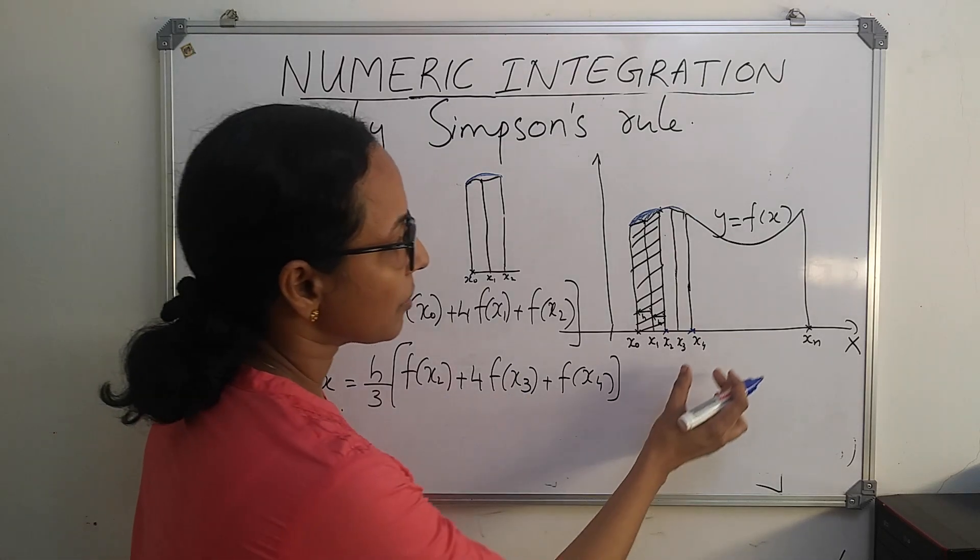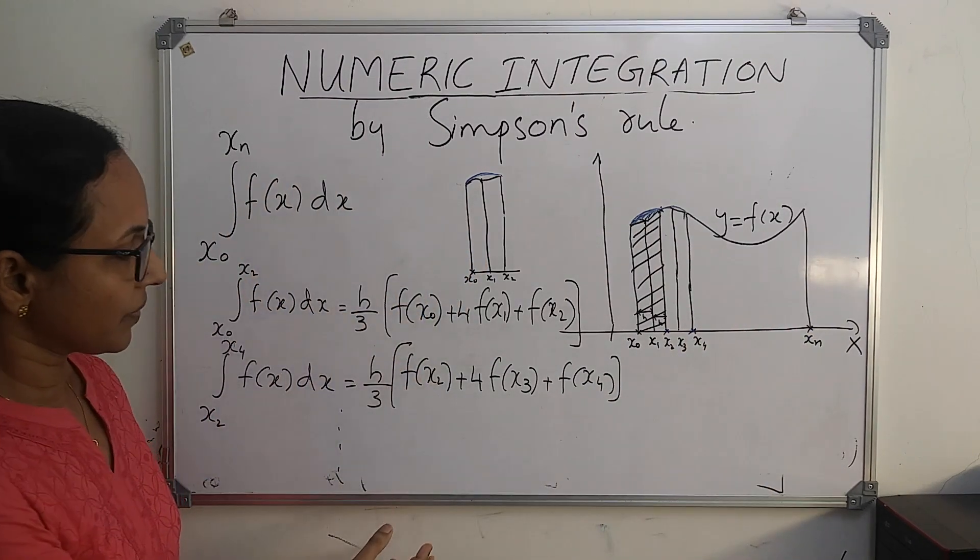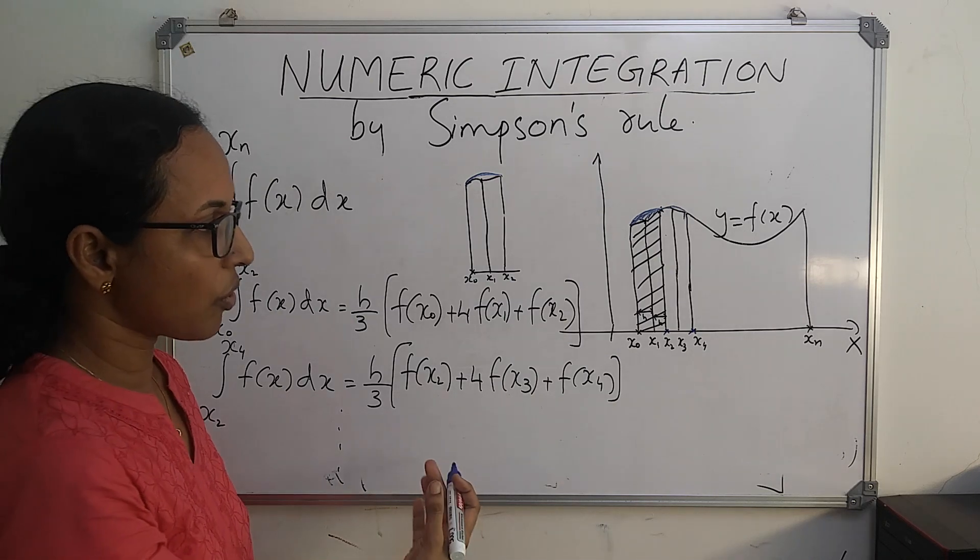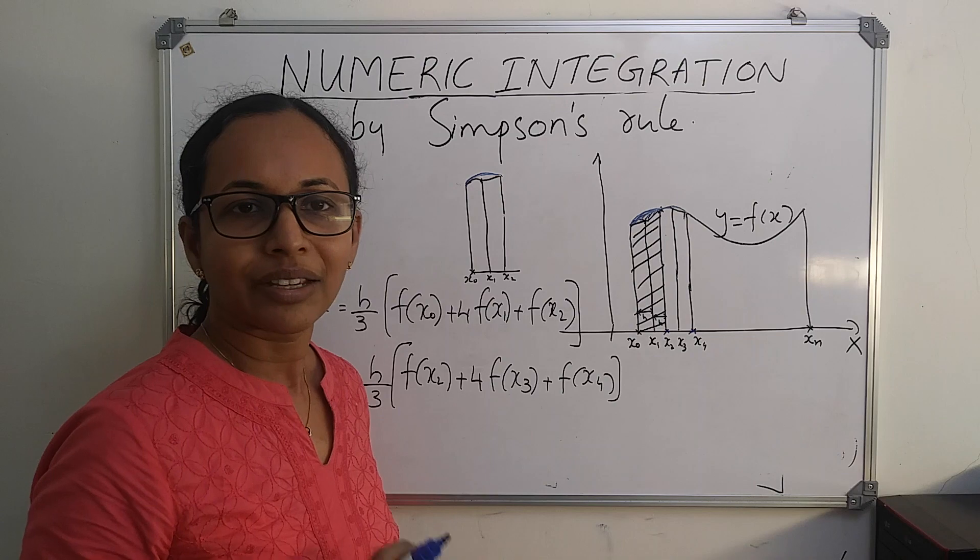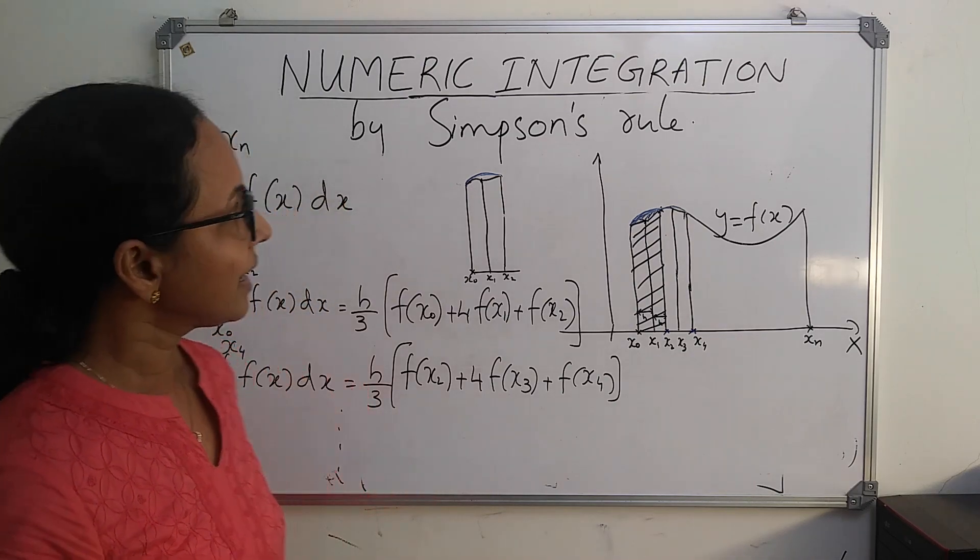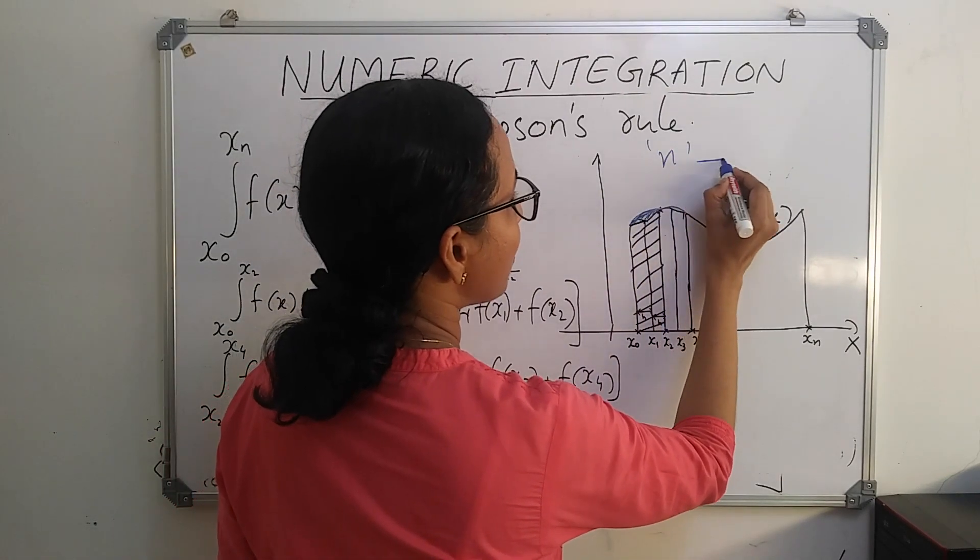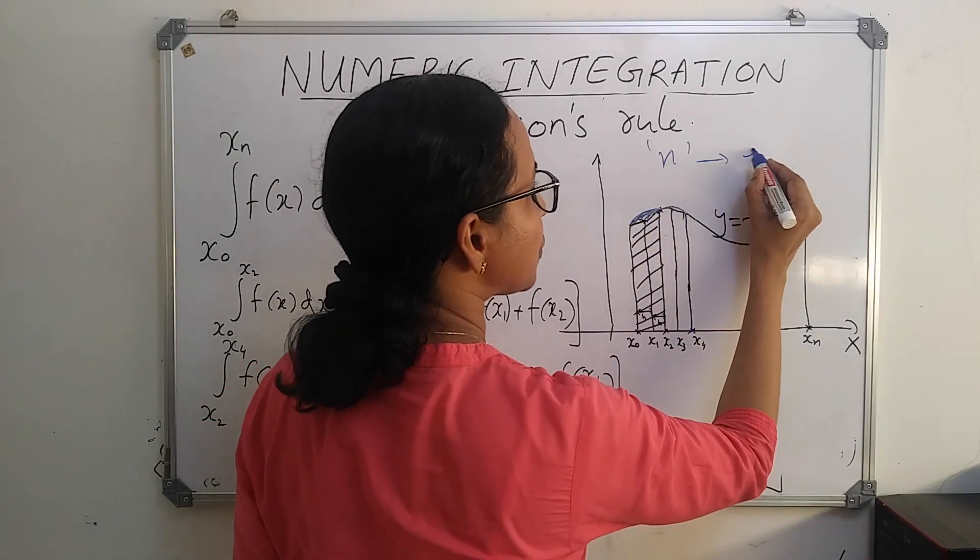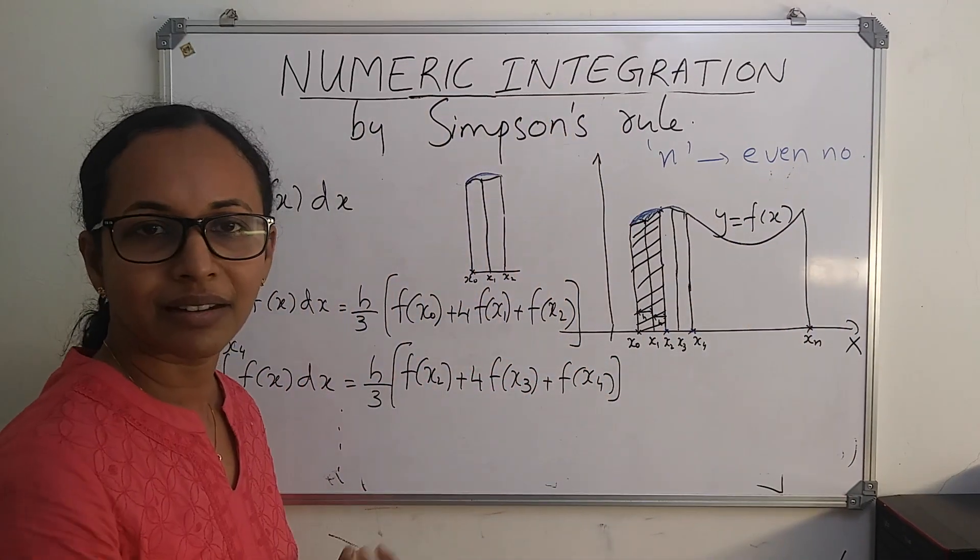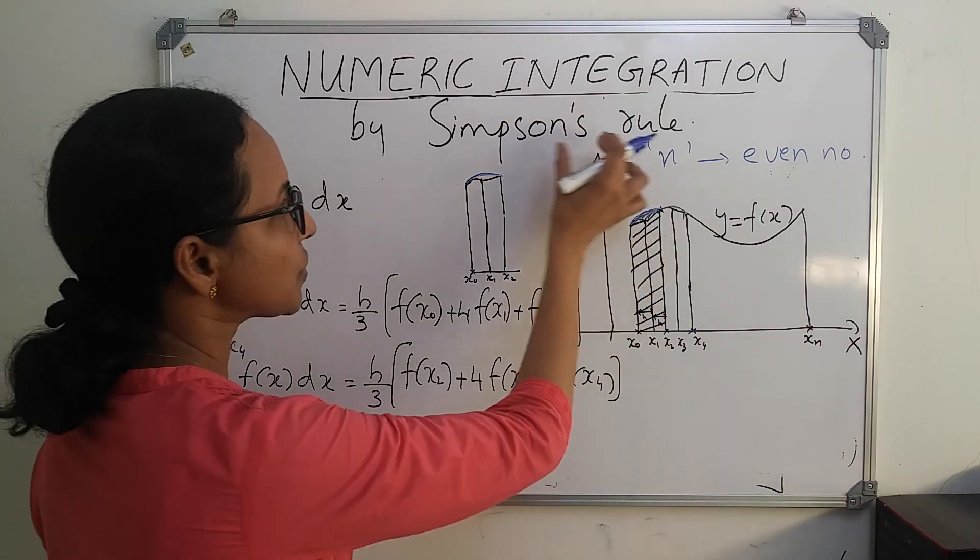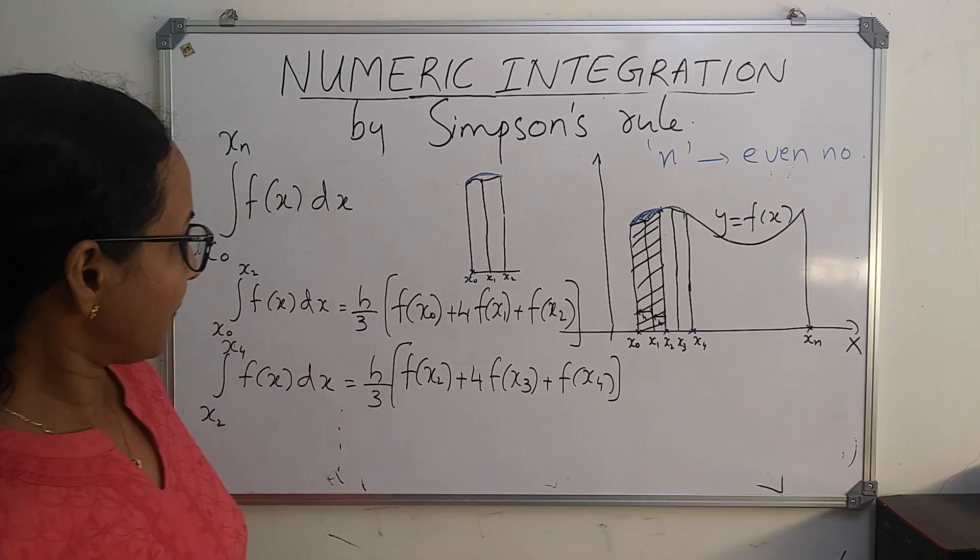By combining two intervals like that, we can find the area of all such subregions. Since we are taking two subregions at a time, in case of Simpson's rule, always the number of subintervals n should be an even number. This restriction is not there in trapezoidal rule, but in Simpson's rule, the number of subintervals must be even.